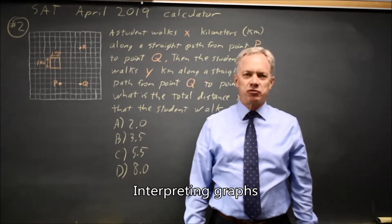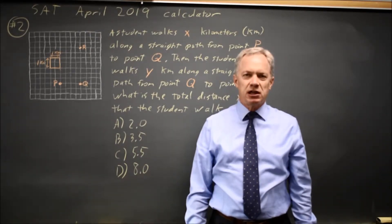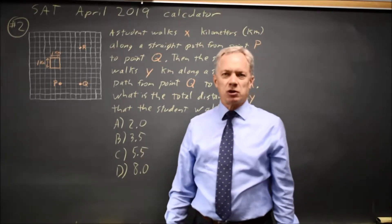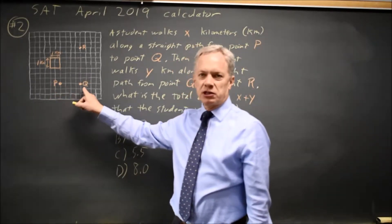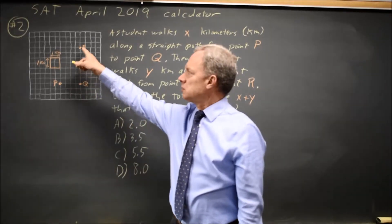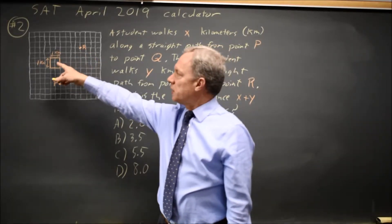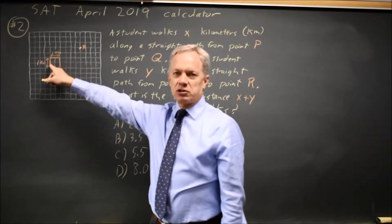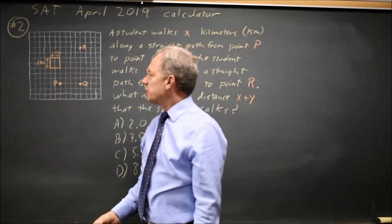This is calculator question number two from the April 2019 SAT. The College Board gives us a diagram and asks the distance the student walks from point P to point Q and then from point Q to point R in a straight line. They give a scale that shows one kilometer is two squares on their diagram.